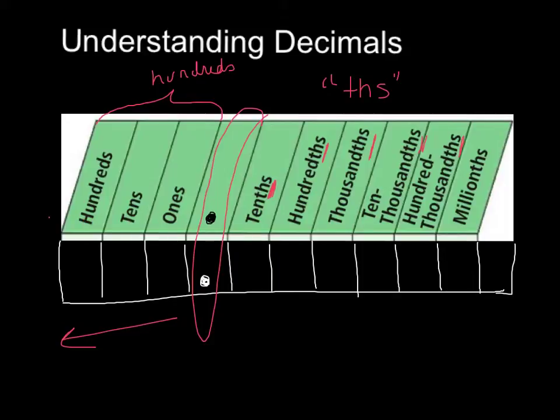When we go to the right of the decimal place, we don't repeat the one, because what the THS sort of stands for, it means sort of out of. So this one place value basically means out of ten.